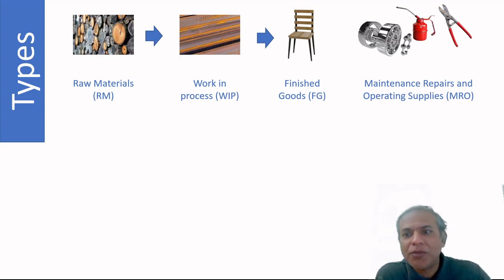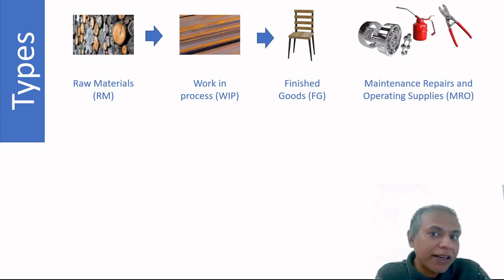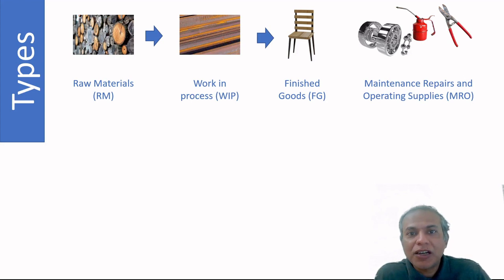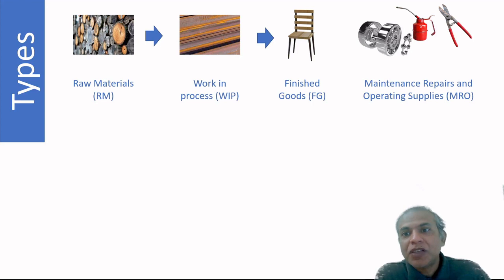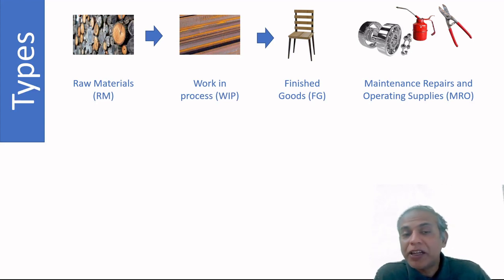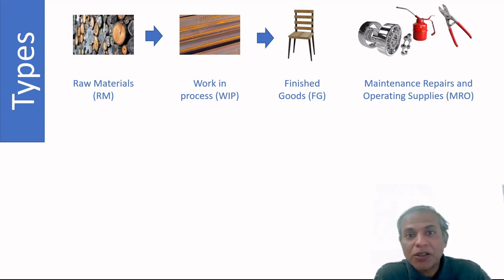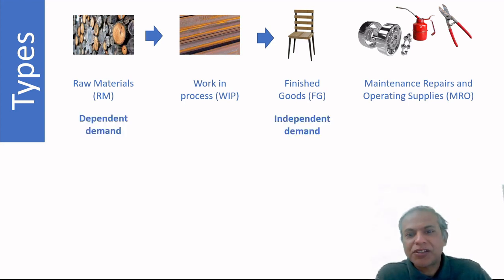There is a fourth type called MRO — Maintenance, Repair, and Operations — referred to as indirect materials in accounting. MRO covers all inventory items used in production but not part of the final product. These items can sometimes be very expensive and costly to store, so MRO inventory management is an important topic in its own right.